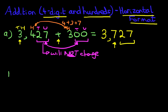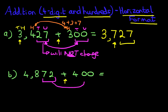Let's move on to our second example. This time we've got 4,872 plus 400. Just put the equal sign. Same principle applies. We're adding the 72 to 00, so the 72 is not going to change. Let's move on to the hundreds.